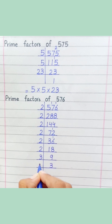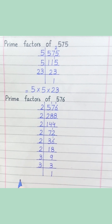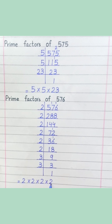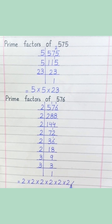3 ones are 3. Equal. 576 equals 2 multiply 2 multiply 2 multiply 2 multiply 2 multiply 3 multiply 3.